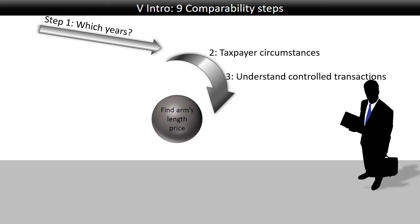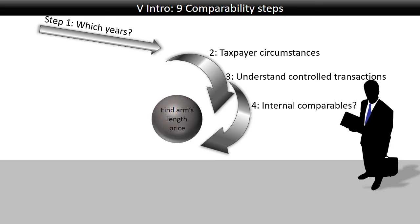You also want to understand the controlled transactions, and this is your functional analysis that we talked about before. Once you've done that, you will try and see if there are any internal comparables. If one taxpayer sells something to a related party and sells the same thing to unrelated parties, that would be an internal comparable. If two unrelated parties sell the same thing to each other, that would be an external comparable. Internal comparables are preferable over external comparables, simply because you at least know everything about one of the two parties — namely yourself.